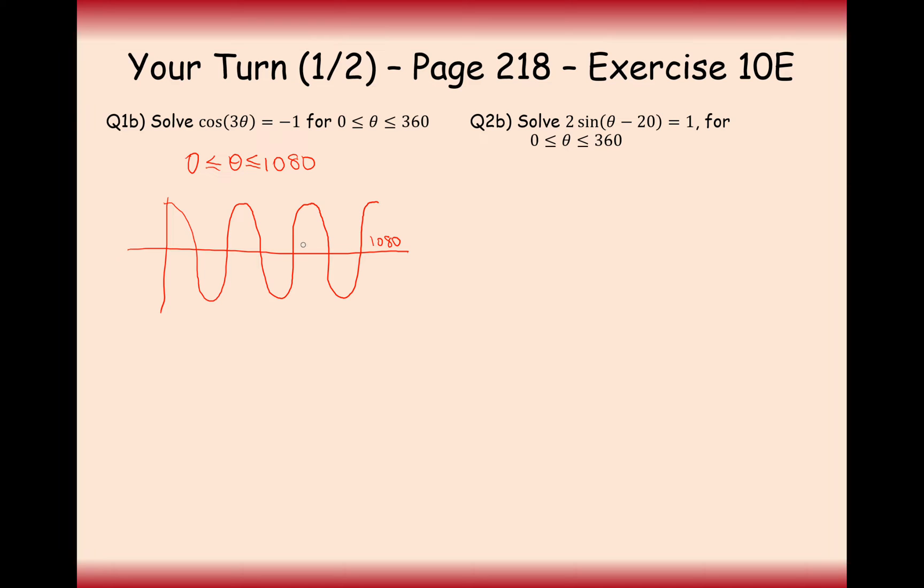Each time we've reached a peak here, we've added on 360 degrees. Now what we want to find is the values that will give us minus 1 for these values of 3θ. So 3θ is going to equal, in the first case, we're going to do cos inverse of minus 1, which will give us 180. That's our first solution here, and then we're going to add on 360 degrees each time to get the next solutions.